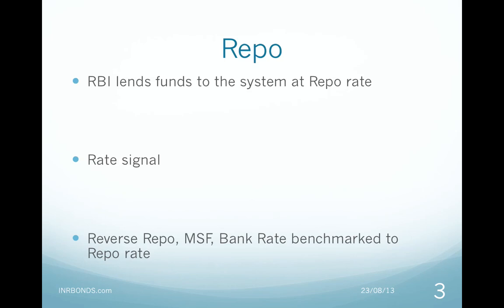RBI would be fine with banks bidding for reverse repo if it wants to ease monetary policy. The MSF or Marginal Standing Facility is fixed at 100 basis points above repo rate, and banks can borrow under this facility by going below the SLR by 1% of NDTL. MSF is more like emergency funding. In July 2013, RBI raised the MSF rate by 300 basis points over repo and restricted bank borrowing under repo to 0.5% of NDTL, wanting the MSF to become the functional rate for lending to the system.